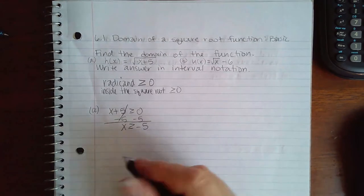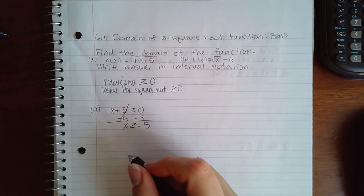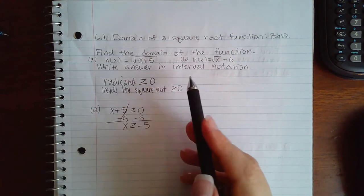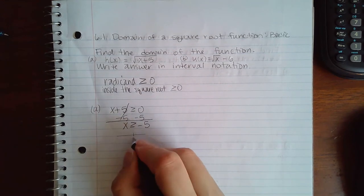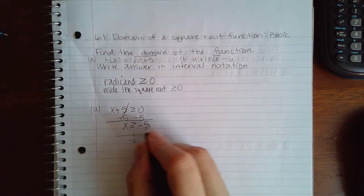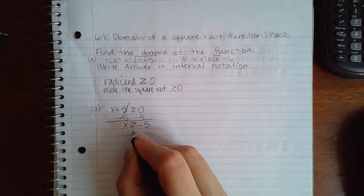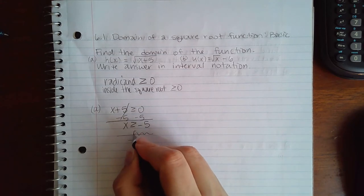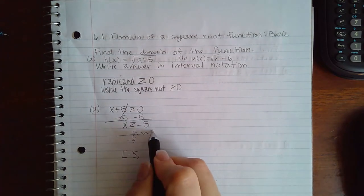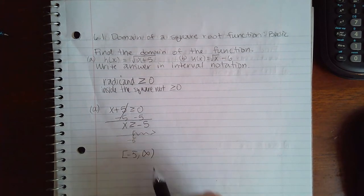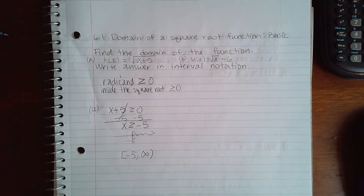And if I want to put my answer in interval notation like it tells me to, that would mean here's negative 5 and everything greater would be this way. And because of this bar it would be a bracket. So it would be bracket negative 5 to infinity, and that's the domain in interval notation.